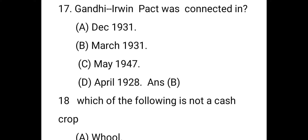The next question: the Gandhi-Irwin Pact was concluded in which period? The right answer is B — March 1931. The agreement was signed on 5th March 1931 between Gandhi, the leader of the Indian National Congress, and Lord Irwin, Viceroy from 1926 to 1931.